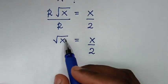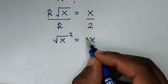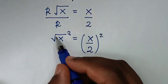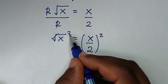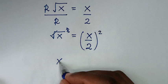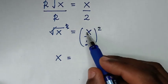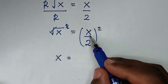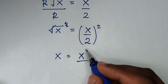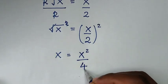Then to remove this square root, we'll square both sides. So the square root will cancel the square, and it will be x is equal to x squared over 2 squared, which is 4.